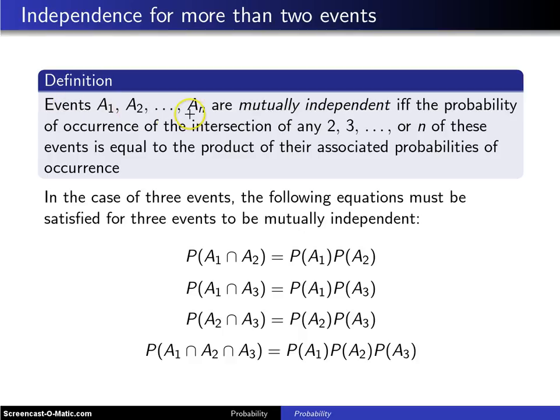Events A1, A2, up to An are mutually independent, and the word mutually will be added on to independent every time there are three or more events. If there's just two, you can just use the word independent, but I throw in the word mutually whenever there's three or more.